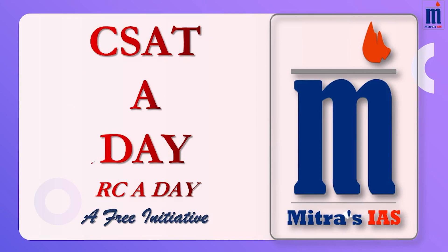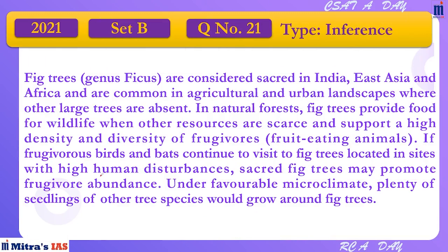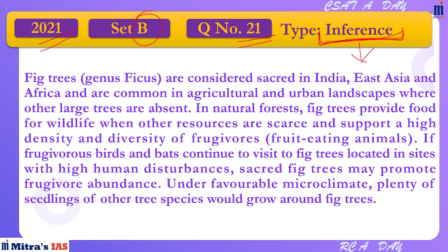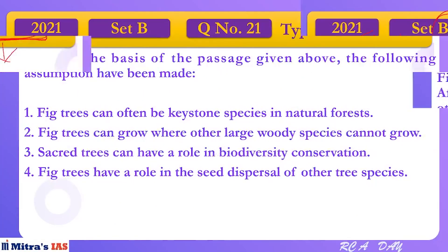Hello all, welcome to SISA. Today we're moving on to the next reading comprehension question. This is 2021 paper Set B, Question number 21 — it's an inference kind of question. Inference means ki jo bhi passage mein diya hua hai, usse hum kisi natije tak pohuchna hai — infer karna hai ki hum kya samjhe us passage se.